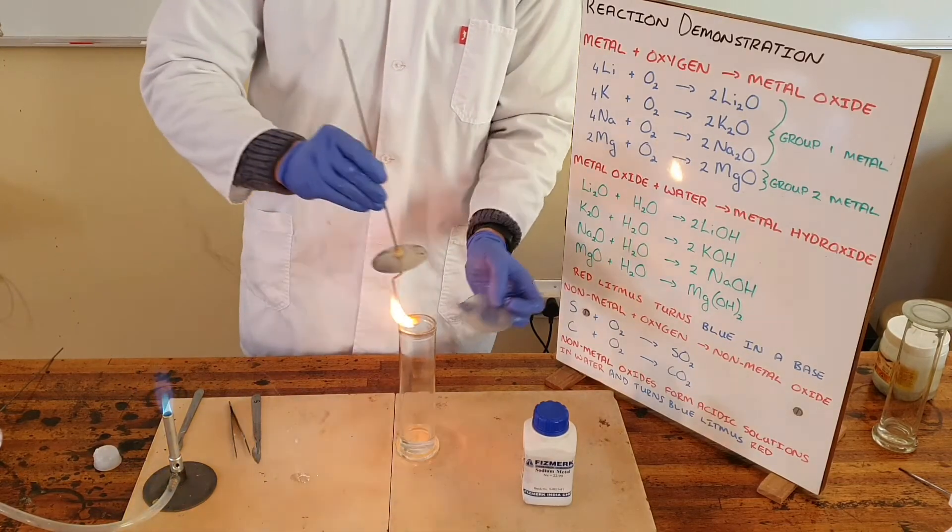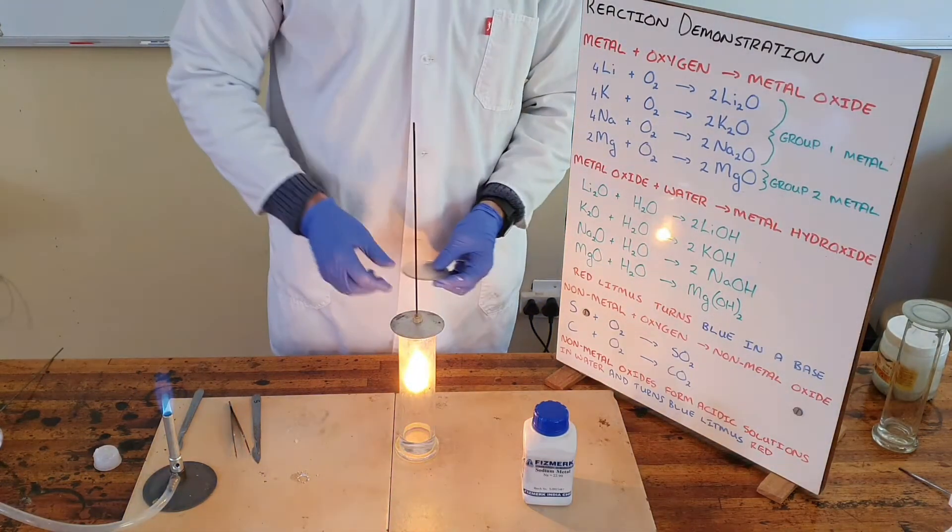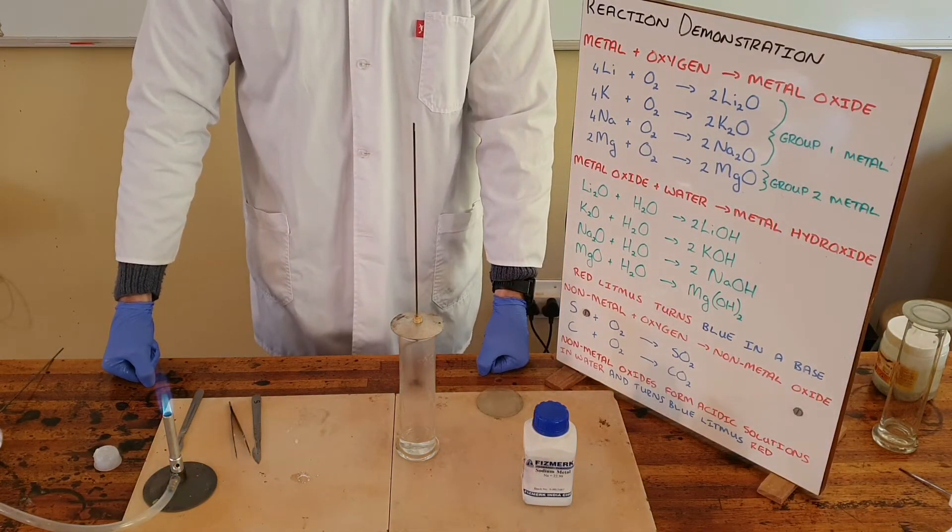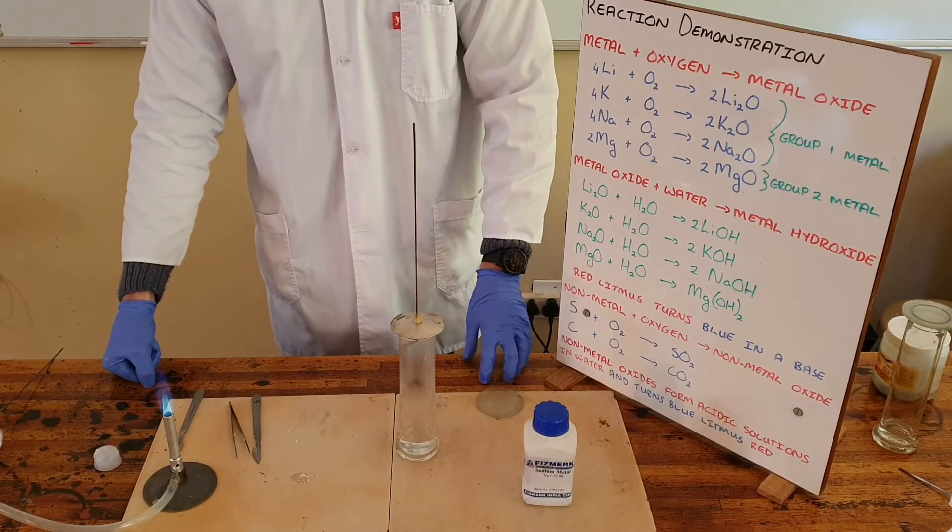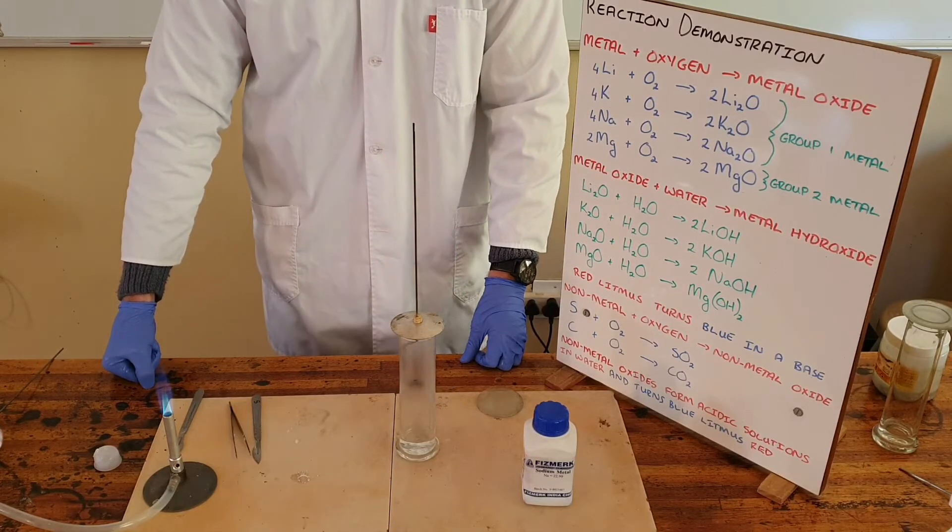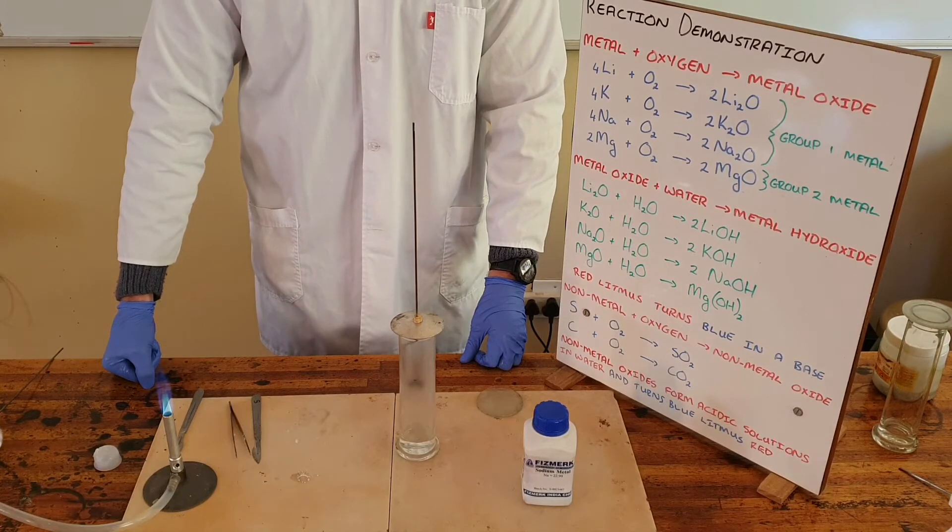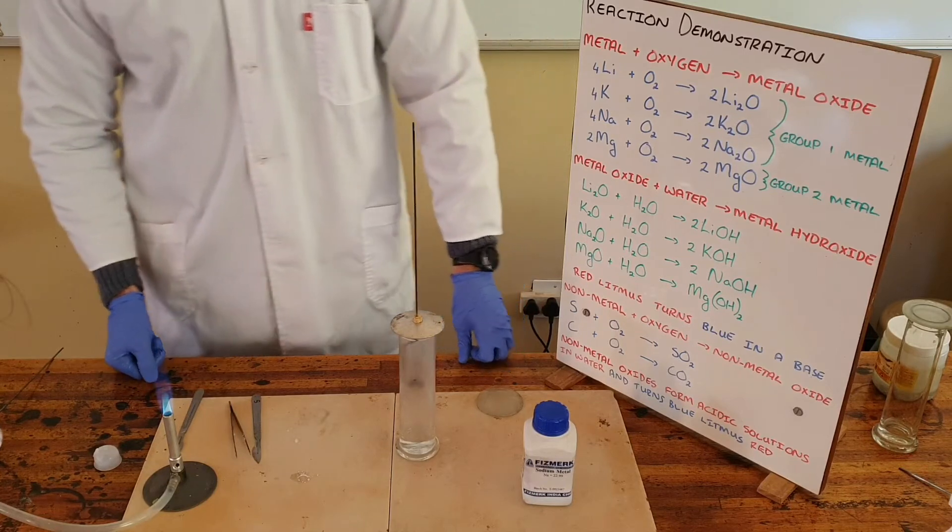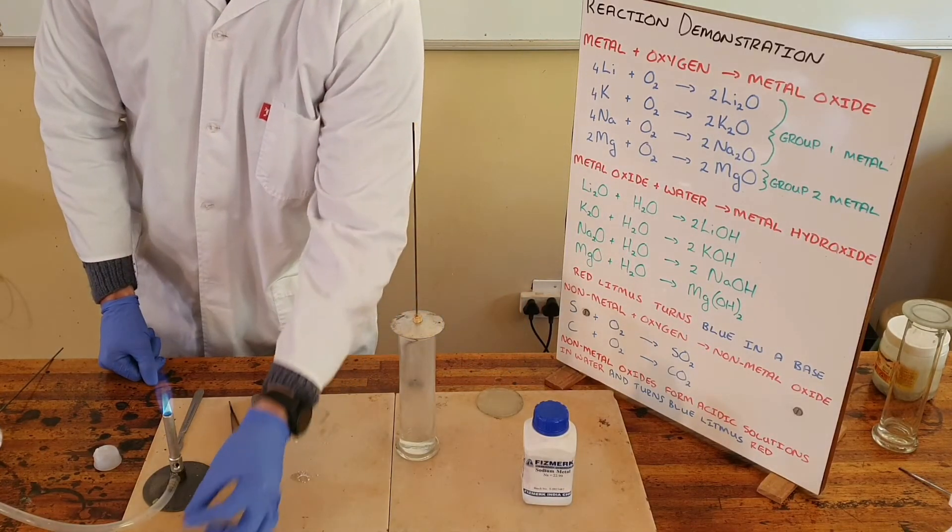You can see that it is burning, and we are in the process of forming sodium oxide. That sodium oxide is now mixing with the water. We know the general equation: when a metal oxide reacts with water, we form a metal hydroxide. Those metal hydroxides are basic or alkaline solutions, which means when we add red litmus paper to that solution, it should turn blue.